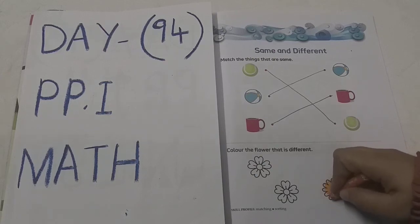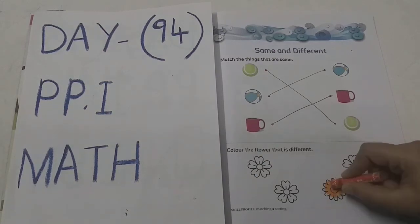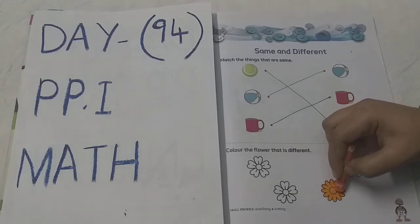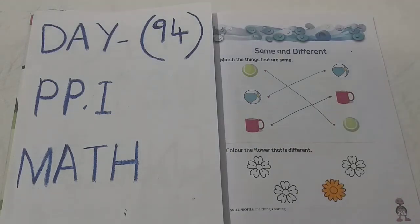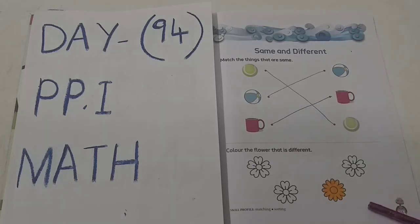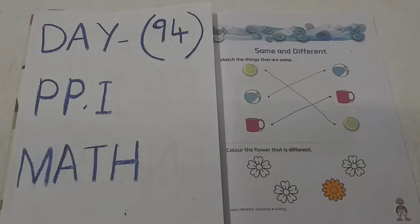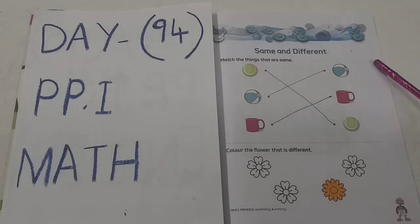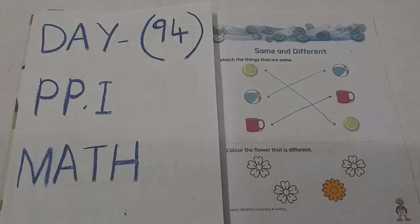Very neatly you have to do the color. We are done with the activity. Same and different — what we learned today? Today we learned a new concept that is same and different. You have activity here — this is the same activity and this is the different activity. Do it at home. And thank you all.